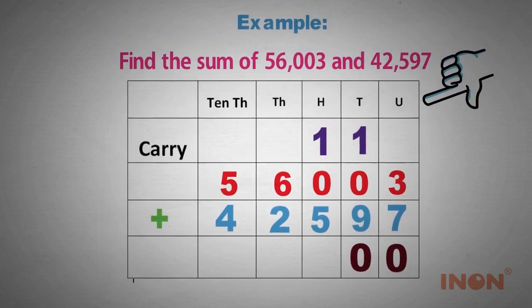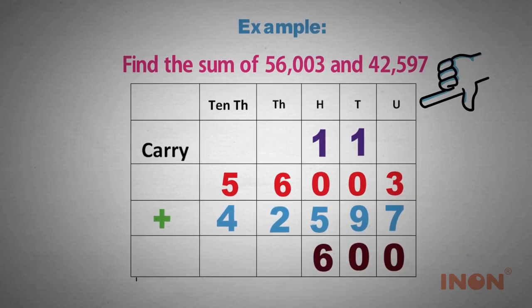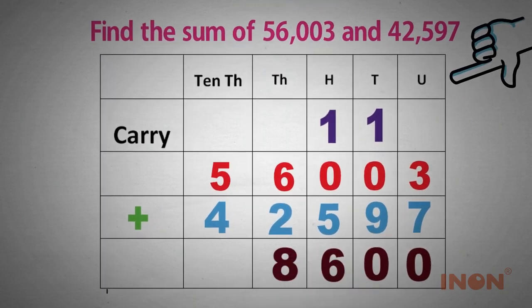Now, 1 plus 5 is 6. Then, 6 plus 2 in the thousands place is 8. In the ten thousands place, 5 plus 4 equals 9.